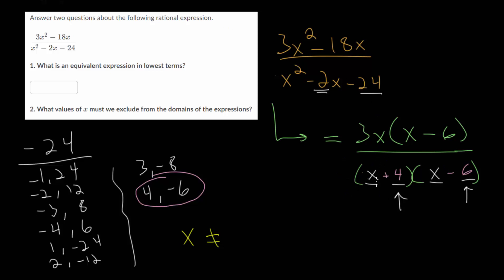You can see here if you plug in negative 4, that would give you 0 times negative 10, which is 0. So negative 4 is excluded. And if you plug in 6, you get 0 times 10, which is also equal to 0. So negative 4 and 6 need to be excluded. That answers our second question.